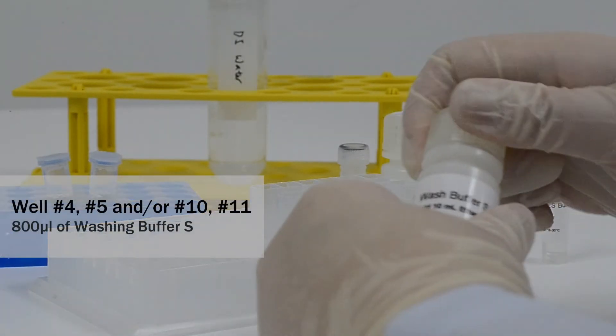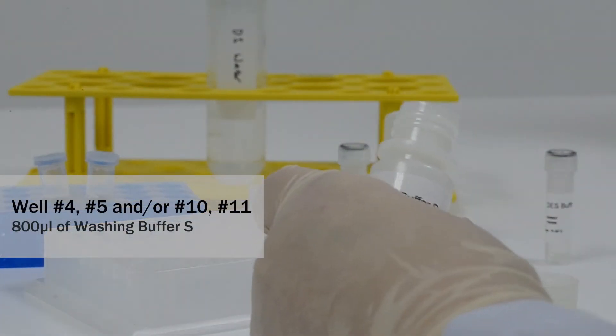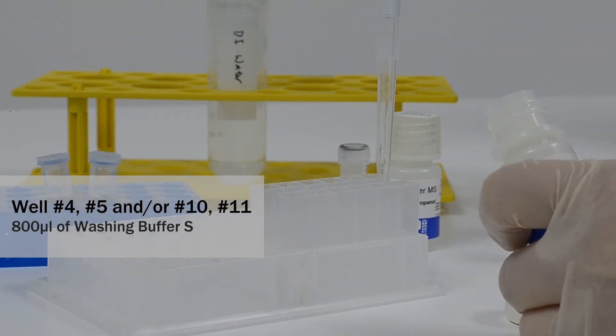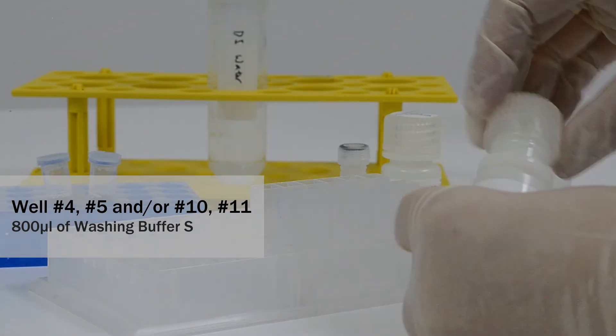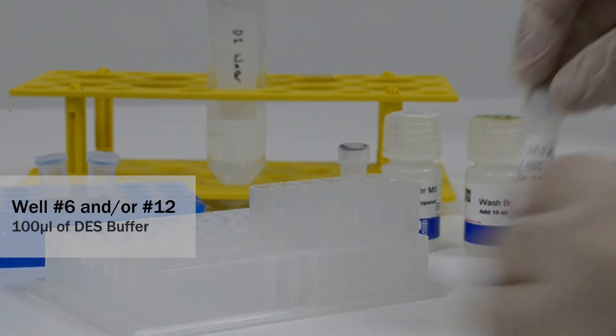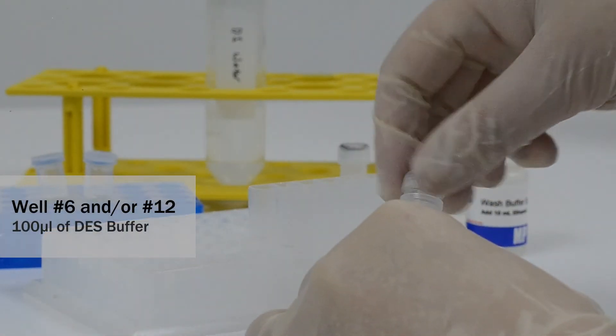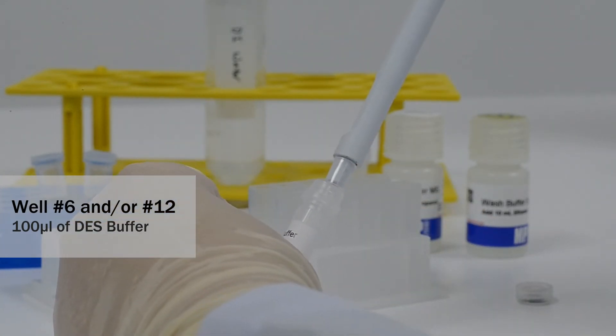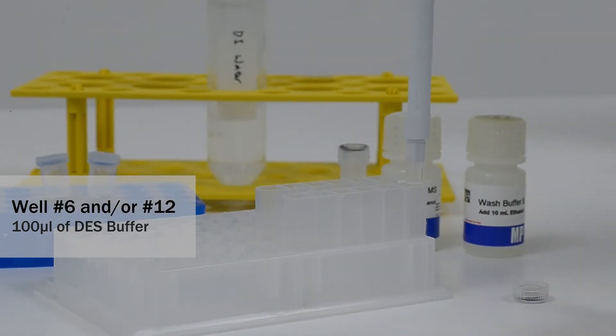Add 800 microliters of wash buffer S into the fourth and fifth wells. When using 96 deep well plates, you can allocate it in the fourth, fifth, tenth and eleventh well or column. Add 100 microliters of DES buffer into the sixth well. When using 96 deep well plates, you can allocate it in the sixth and twelfth well.